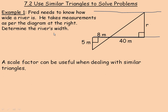In the first example, Fred wants to know how wide a river is. This is the river here — one bank and another bank. He's trying to determine the distance across the river by taking measurements on his side. He's measured the distance from that point to here as 40 meters, this segment as 8 meters, and this one as 5. These two triangles would be similar, and we'll use that idea to find the distance across the river.